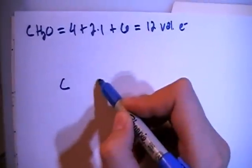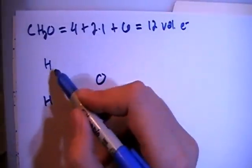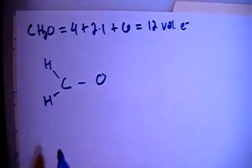So we have the carbon in the center, oxygen on the right, and 2 hydrogens. So let's go ahead and single bond the hydrogens and then single bond the carbon to the oxygen.